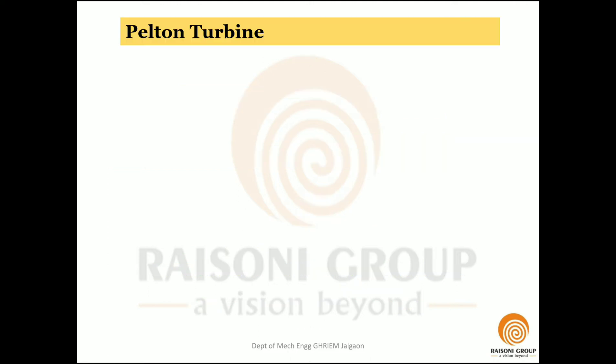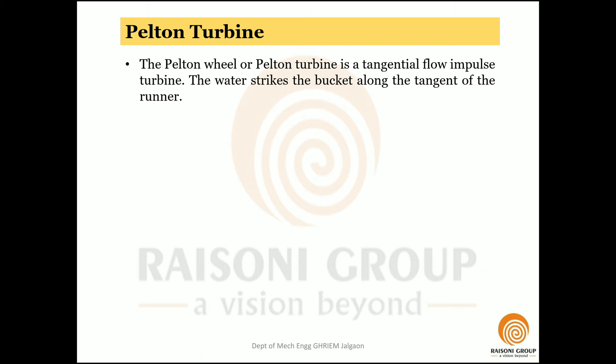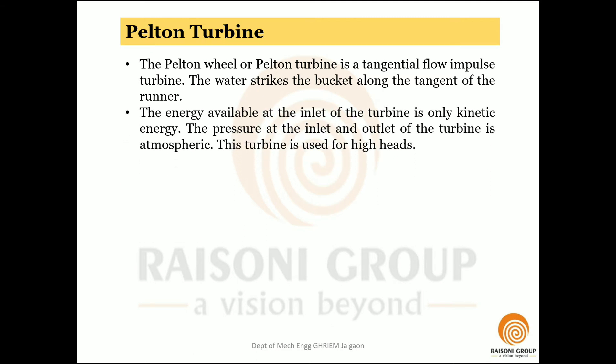The Pelton wheel, also called the Pelton turbine, is a tangential flow impulse turbine. The water strikes the buckets along the tangent of the runner, so the water strikes the buckets in a tangential direction — hence it is a tangential flow turbine and also an impulse turbine.